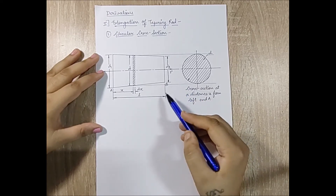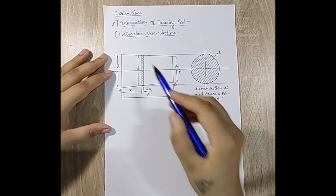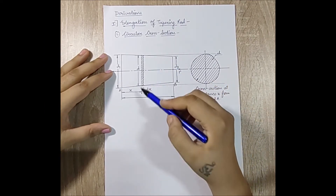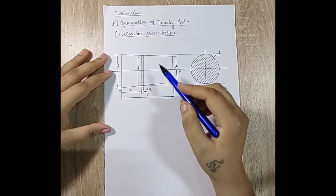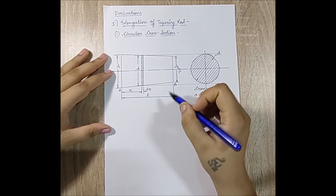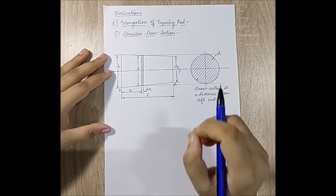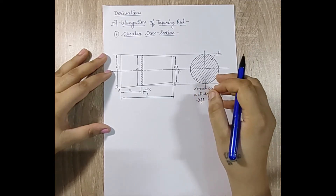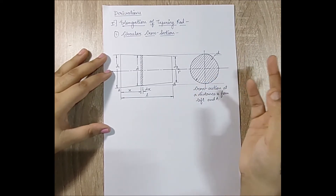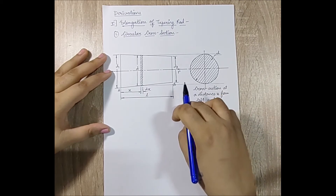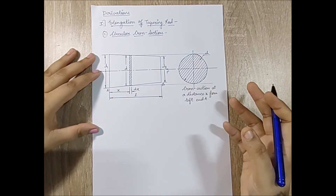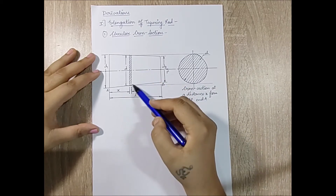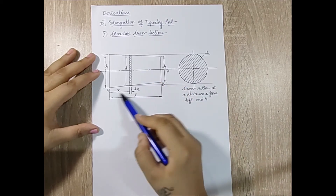There is a simple technique we use in mathematics: for a particular specimen or object, we divide it into an infinite number of small strips. We take out a small strip, study the elongation for that strip, then integrate it over the entire length to get the total elongation of the body. Let me choose a small strip at a distance x from end A, with thickness dx.